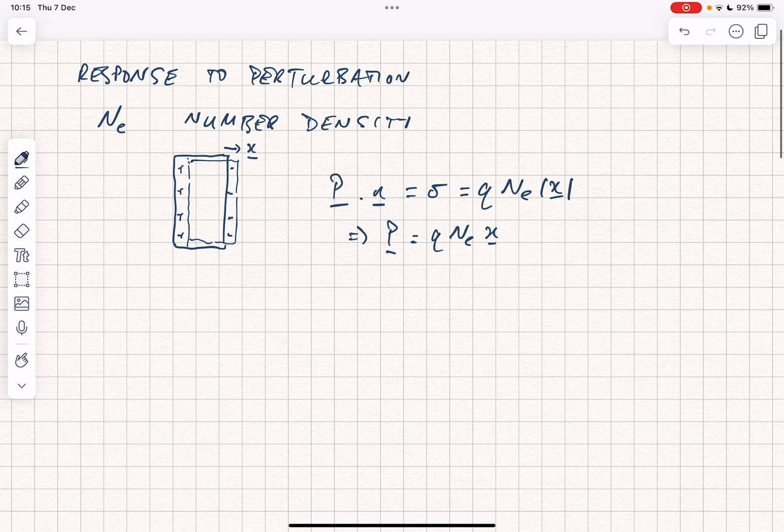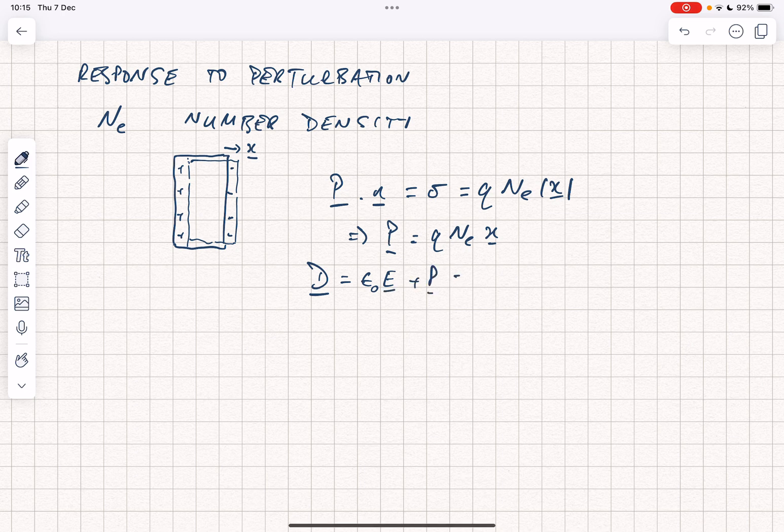We can then consider what happens to the electric displacement, which we define as epsilon 0 E plus P, which is equal to zero because there's no free charge. And therefore E, the electric field associated with the polarization, is minus P over epsilon 0.